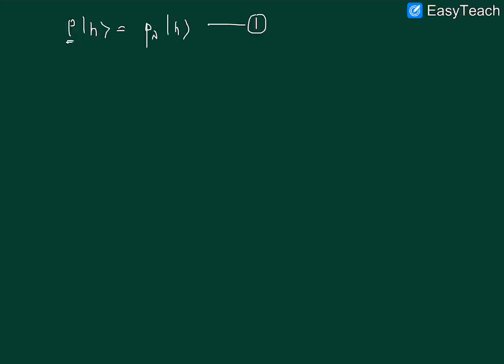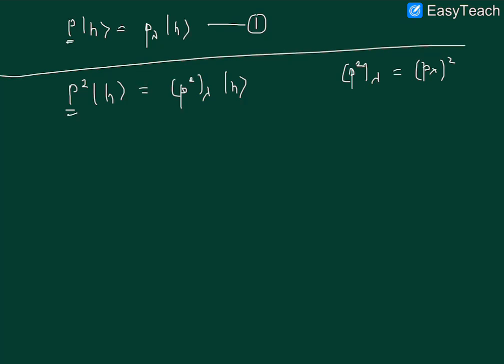Second is I am applying P^2 on vector |h⟩. That gives me the eigenvalue - the eigenvalue of P^2 is P^2_λ into |h⟩ vector. You must notice that there is a difference between P^2_λ and P_λ^2. So P^2_λ is a certain element that is different, and P_λ^2 is a different element. These two are not equal yet, so they are totally two different quantities as of now.